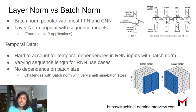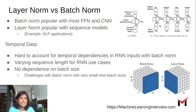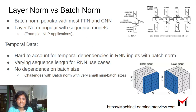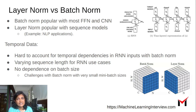Layer norm is more popular with sequence models. Let's say we have an RNN — here is a picture of an RNN. The inputs have a temporal dependence, so each instance is related to the previous instance. If we try to normalize across instances, it might change the properties of the input, which is not ideal. That's why we want to do something within an instance and not across instances, and that was one of the motivations for layer norm.